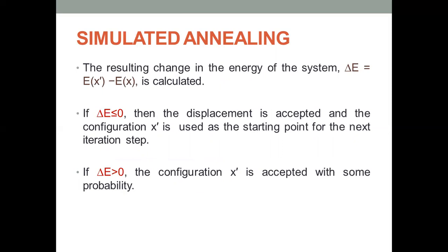We calculate the energy function. If x-dash is the new node formed and x is the present node, we calculate the energy function. If the node selected is better, we take that as the starting point and proceed. If the node chosen has a lesser value — if it is not the better possibility — we still accept the node with a probability. We choose a random value from 0 to 1, and with that probability we accept the chosen node as the next possible move and proceed.